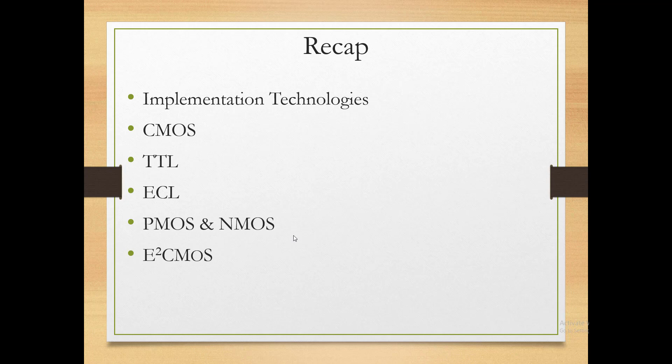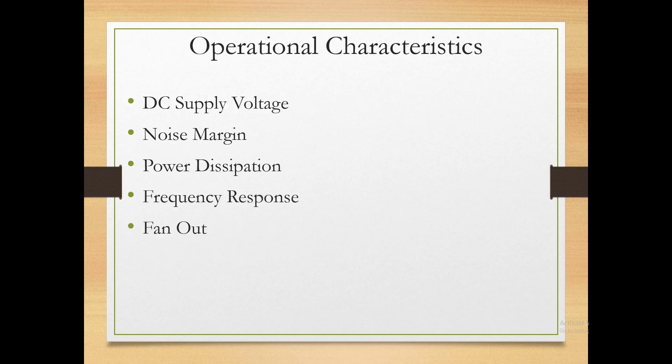These ICs have very low power consumption. Finally, we have E-scale CMOS — a combination of CMOS and NMOS technology used to implement programmable logic devices. The operational characteristics we will discuss today include DC supply voltages, noise margin, power dissipation, frequency response or propagation delay, and fan out.